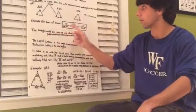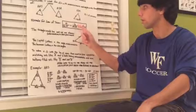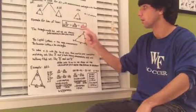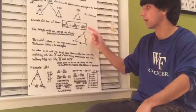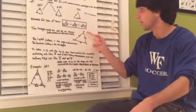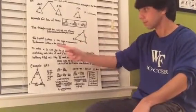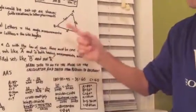The formula for the law of sines is lowercase a over sine capital A equals lowercase b over sine capital B equals lowercase c over sine capital C. The triangle would be set up as shown with variations to letter placement. All the capital letters A, B, and C are the angle measurements, while the lowercase letters are the side lengths.